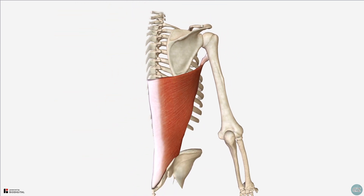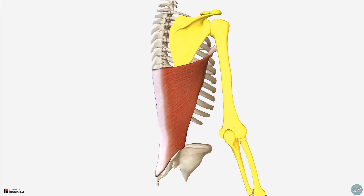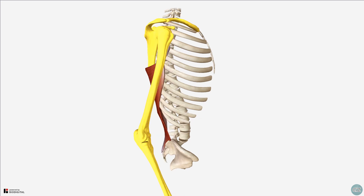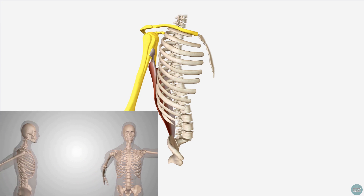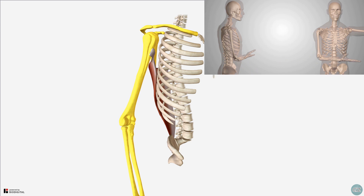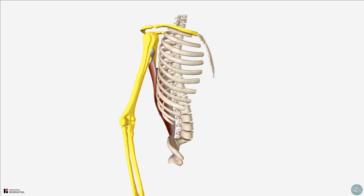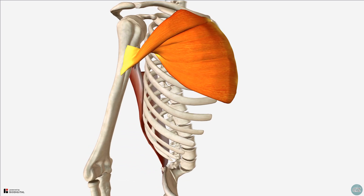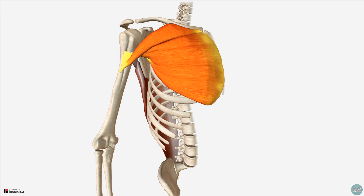In terms of its function, because the latissimus dorsi has attachments on both the axial skeleton and the appendicular skeleton, it produces movements both of the trunk and of the upper limb. The main functions are extension, adduction, and medial rotation of the humerus. The latissimus dorsi acts with the teres major and pectoralis major for adduction and medial rotation, and works with the sternal head of the pectoralis major and teres major for extension.